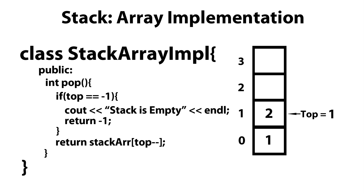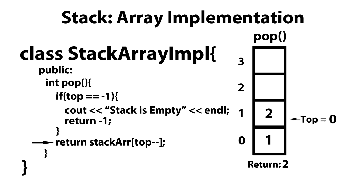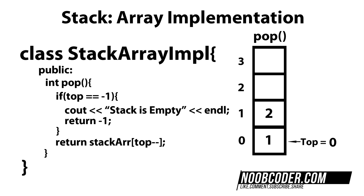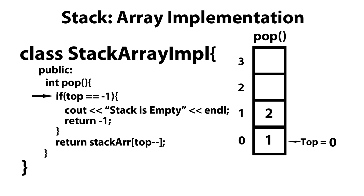Now let's take a look at the pop method in action. If I call pop now, it checks whether the stack is empty — is top equal to minus one? In this case, it's not, so we skip the if condition. We return whatever is at stack array sub top, which returns two. Since it's a post-decrement, after we return, top is decremented, so now top is equal to zero. If I call pop one more time, top is not minus one, so we return stack array sub top, which returns one. Then top is post-decremented to minus one.